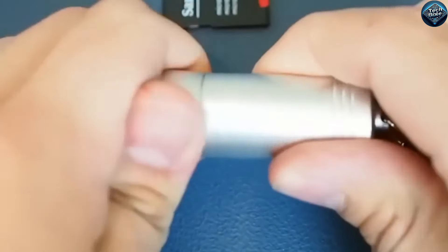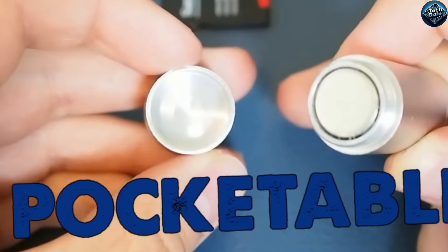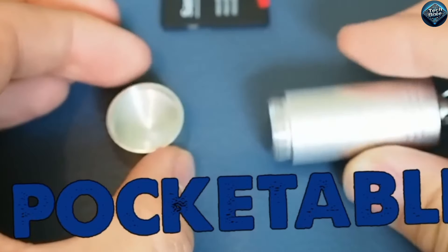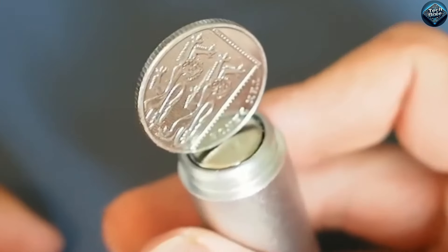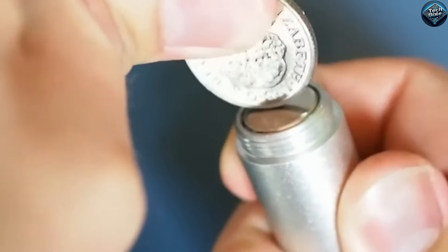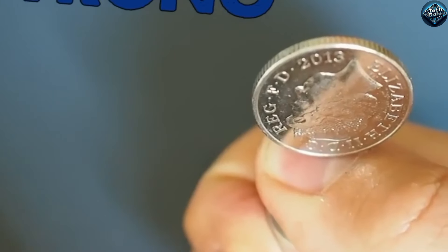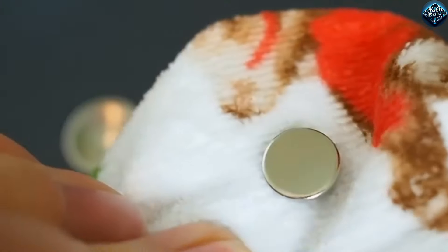The security tag magnet remover is a powerful tool designed to quickly detach security tags from retail items, but its use is strictly illegal for consumers. This small device, often resembling a keychain, can bypass the magnetic locking mechanism found in many store security tags, making it a favored tool among shoplifters.